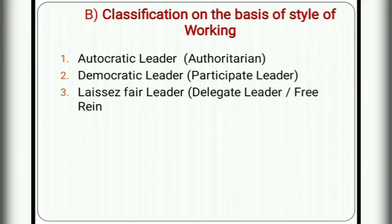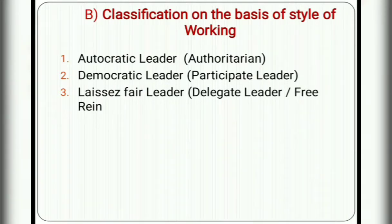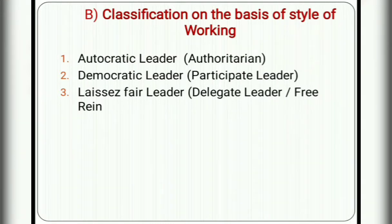We are moving toward the next classification — classification on the basis of style of working. The first type is the autocratic leader, also called the authoritarian leader. They are also called dominant leaders. They have dominance over the members of the group. Whatever decisions they take, they take on their own — they do not include any members in the decision-making process, or very rarely. An example is Hitler.